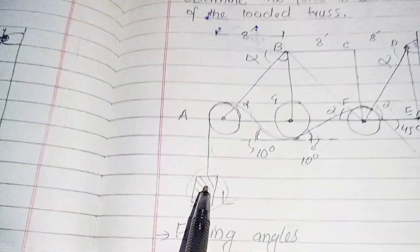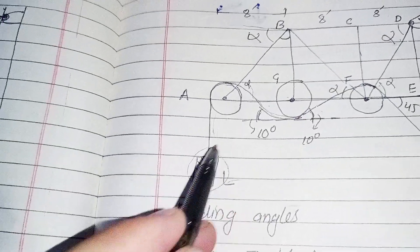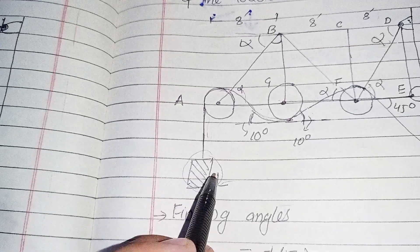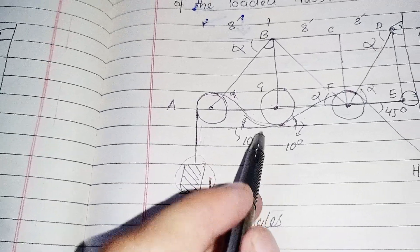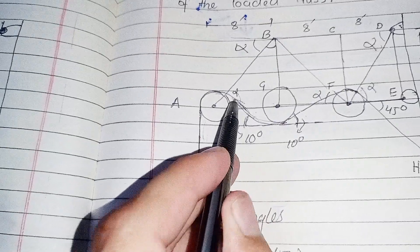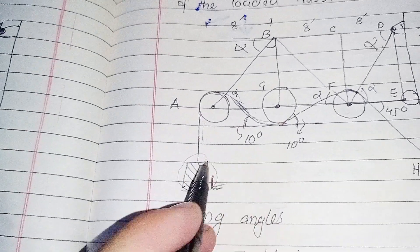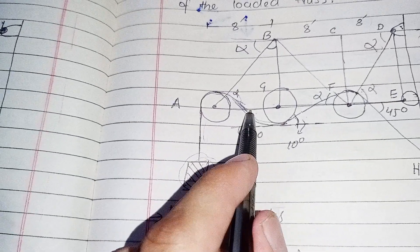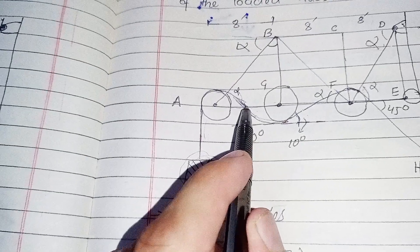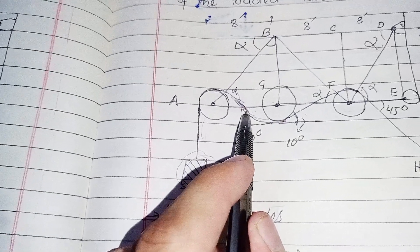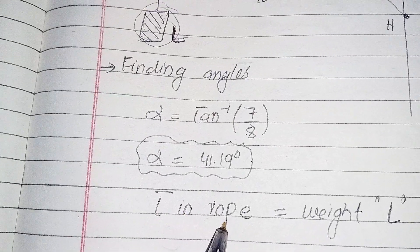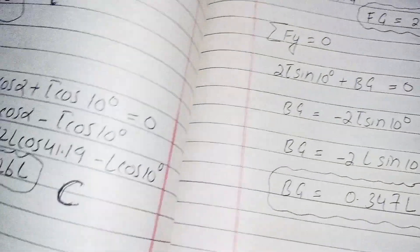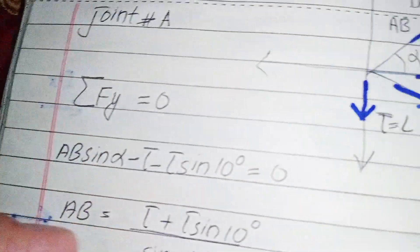The tension in the cable T is equal to L, the weight of the load, because the cable tension exactly equals the load weight. So T equals L.